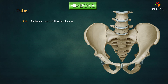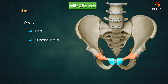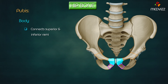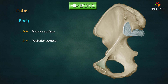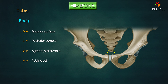The pubis forms the anterior part of the hip bone and articulates with the opposite bone, forming the symphysis pubis. It also forms the anterior one-fifth of the acetabulum. Its parts are the body, superior ramus, and inferior ramus. The body connects the superior and inferior rami and has three surfaces, one border, the pubic crest, and the pubic tubercle. The posterior surface is smooth and forms the anterior wall of the bony pelvis, with its upper part related to the urinary bladder. The symphysial surface is rough, oval, and articulates with the opposite pubis to form a secondary cartilaginous joint covered by hyaline cartilage. The pubic tubercle, crossed by the spermatic cord in males or round ligament of the uterus in females, is a rounded projection at the lateral end of the pubic crest.